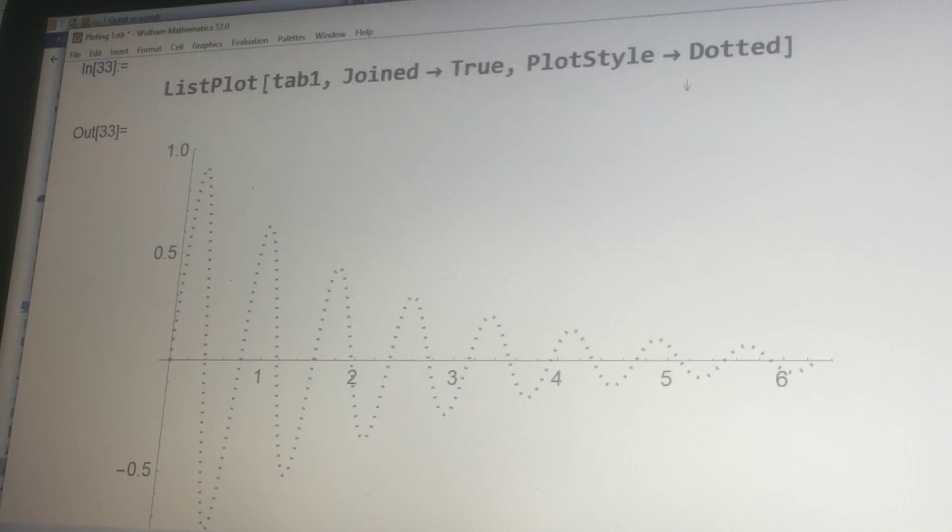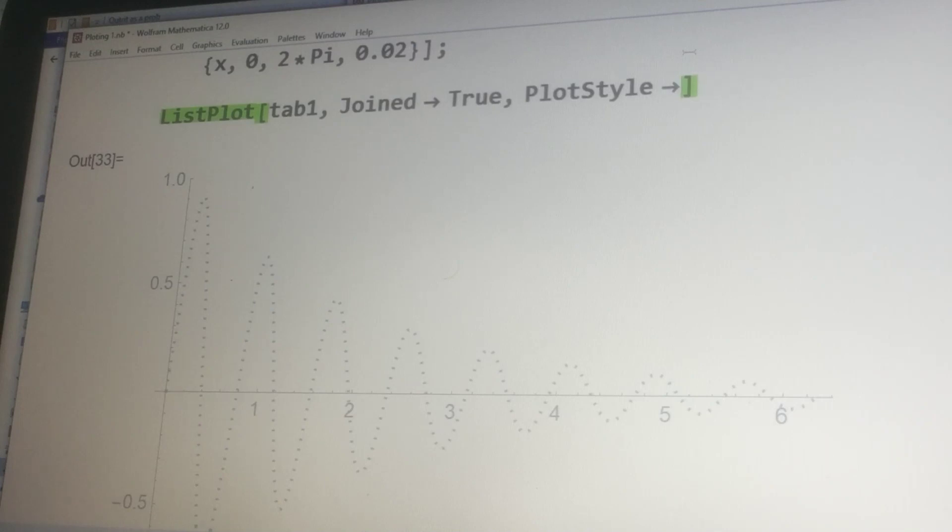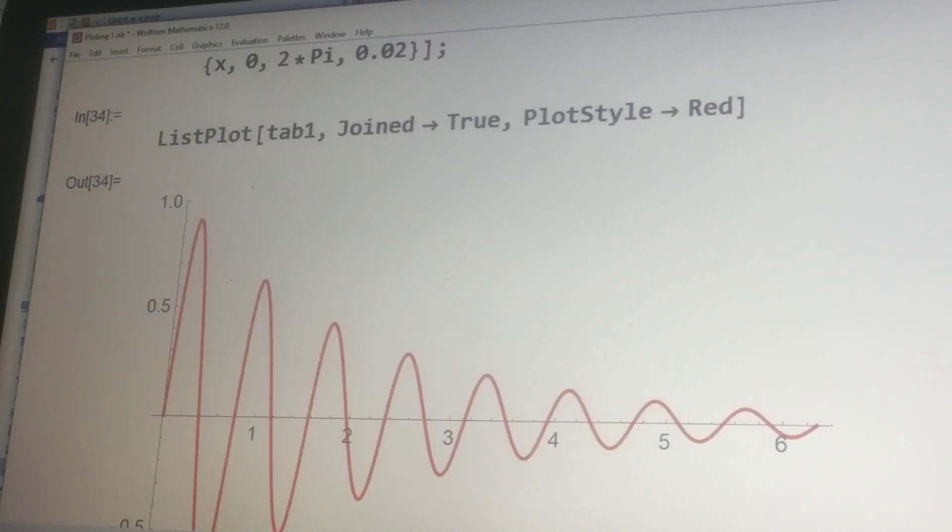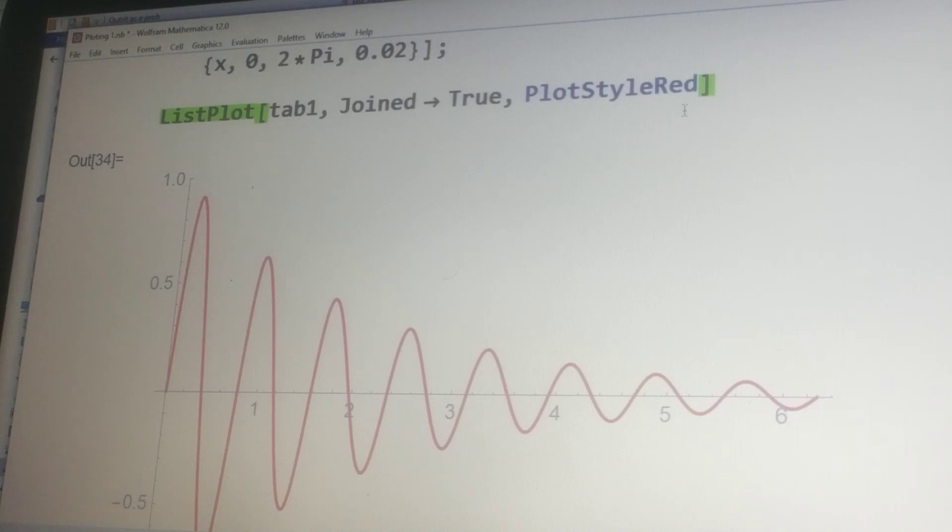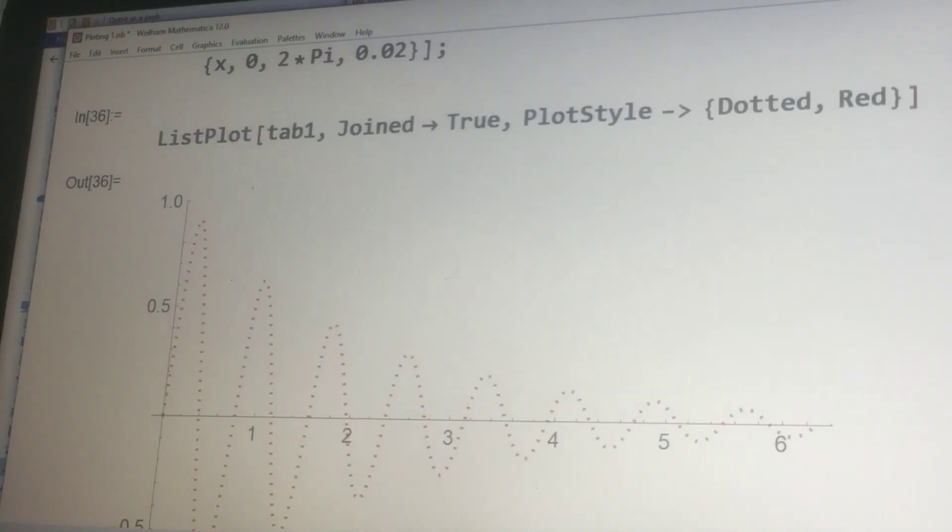You can change even the color of the plot by writing a color. Let me make it red. I would like to add Red. Since I removed the dotted, now it is red. And if I want to make it dotted as well as red, then I have to add a list. First I write Dotted, and then Red, and then make this list. Now it is dotted in red.